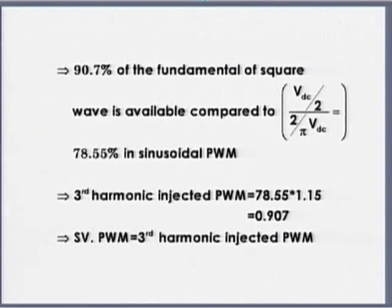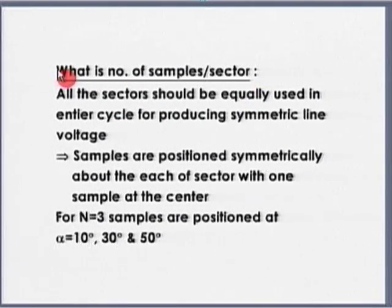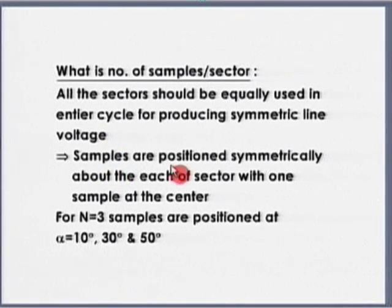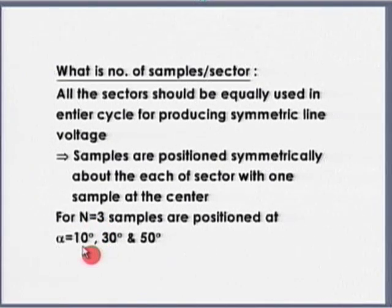You can also go to the slides — they are simple to understand. The number of samples per sector must follow the rule: all sectors should be equally used in the entire cycle, producing symmetric line voltage, with samples positioned symmetrically about each sector with one sample at the center. If n equals 3, the sample positions are at 10, 30, and 50 degrees, meaning I need sin(10°), sin(50°), sin(30°), and sin(10°). That is all I need.